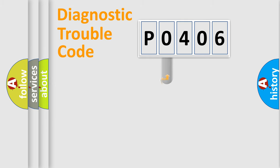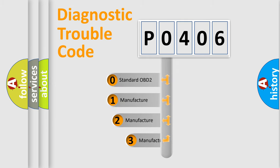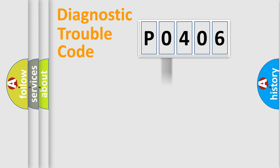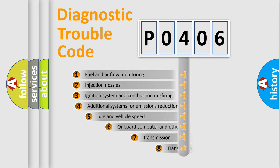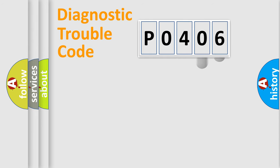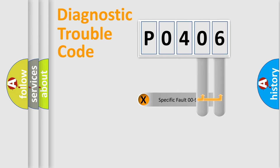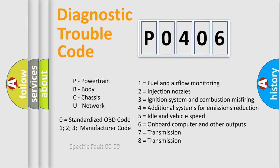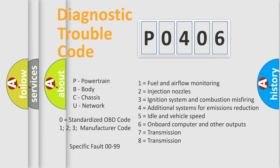This distribution is defined in the first character of the code. If the second character is expressed as zero, it is a standardized error. In the case of numbers 1, 2, or 3, it is a more specific expression of a car-specific error. The third character specifies a subset of errors. The distribution shown is valid only for the standardized DTC code, and only the last two characters define the specific fault of the group. This division is valid only if the second character code is expressed by the number zero.